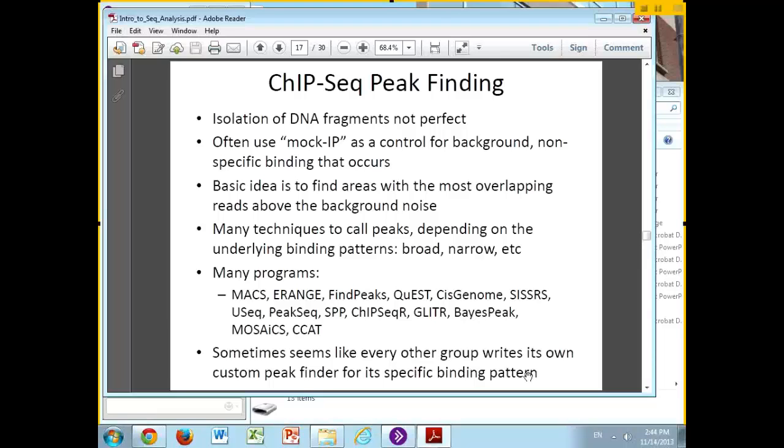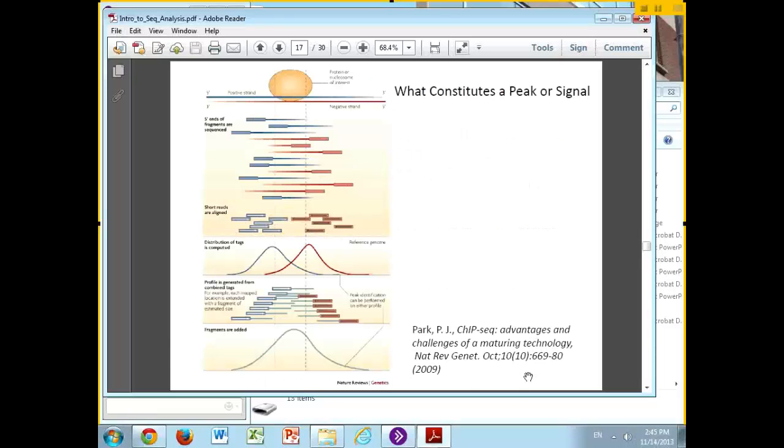The basic idea of peak finding is to find the areas with lots of overlapping reads above the background noise. There are several techniques developed to call peaks. Different proteins will have different types of binding: some have broad binding, some have very narrow binding. There are many programs which do this. Sometimes it feels like every group writes their own custom peak finder for their particular binding pattern.